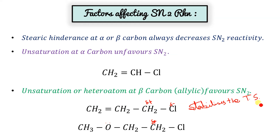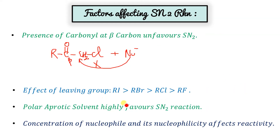Beta carbon with unsaturation favors SN2 mechanism. A longer bond length means a more easily departing leaving group, and hence a faster SN2 reaction.